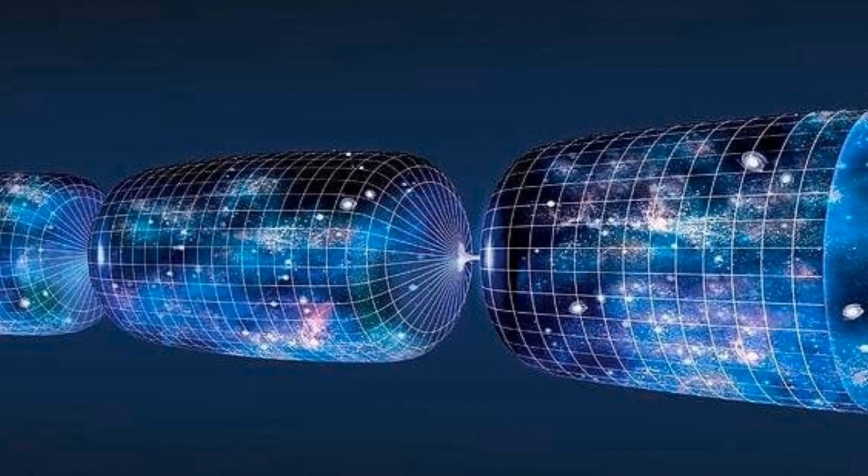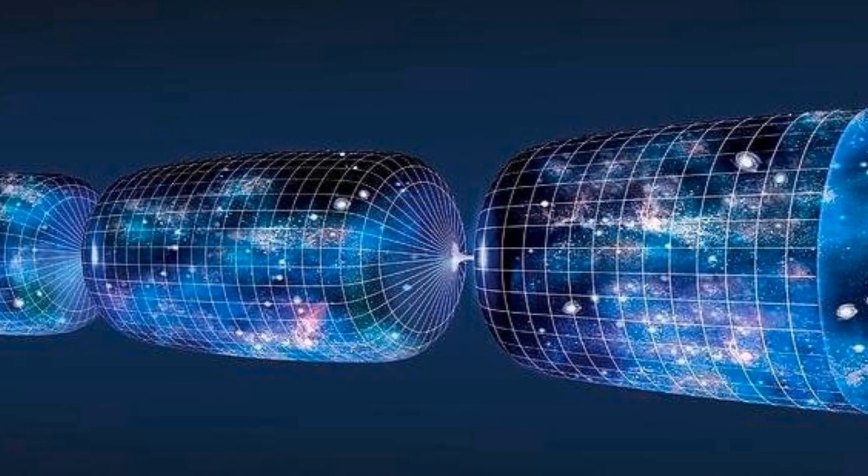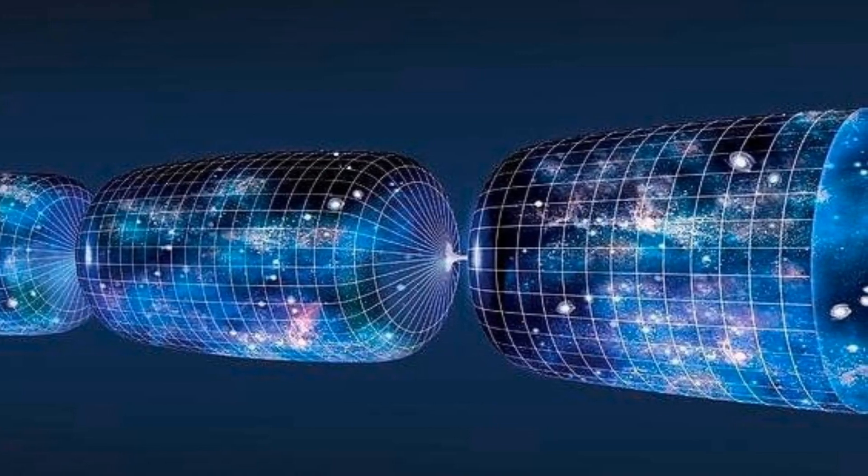Penrose postulates that these circular patterns are extremely red-shifted photons originating from black holes in the preceding universe. Importantly, Penrose's theory challenges the concept of a Big Crunch, which was once believed to be a possible fate of our universe.